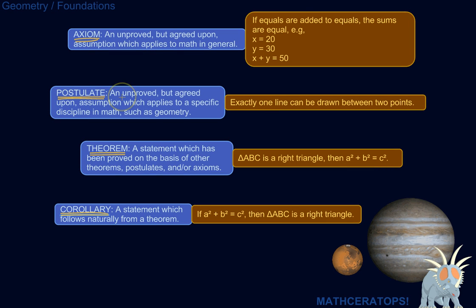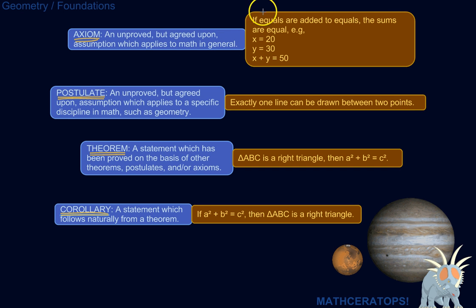A postulate is an unproved but agreed upon assumption which applies to a specific discipline in math, such as geometry. So it's like an axiom, but it's more specific. This axiom is true for algebra, true for geometry, true for calculus — true for all of math. A postulate would be something more specific to whatever discipline you're working in. In this case, we're looking at geometry.